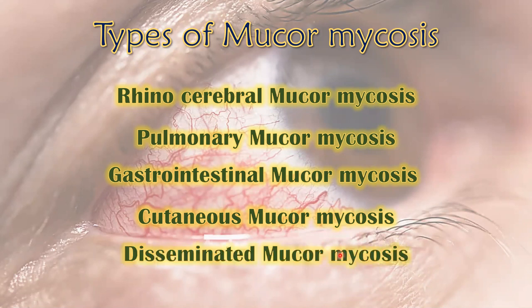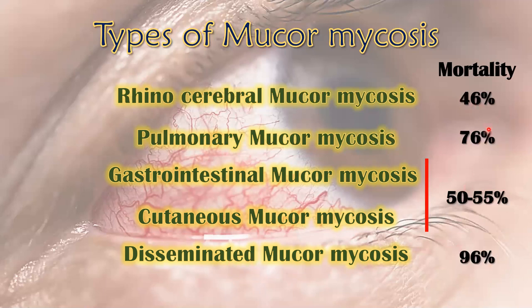The final type is disseminated mucormycosis — 'disseminated' meaning the spread. In disseminated mucormycosis, the fungi enter the bloodstream and through the bloodstream spread all over the body, infecting several tissues and organs. This is the most severe form of mucormycosis. Here you can see the percentage mortality rates associated with each type.